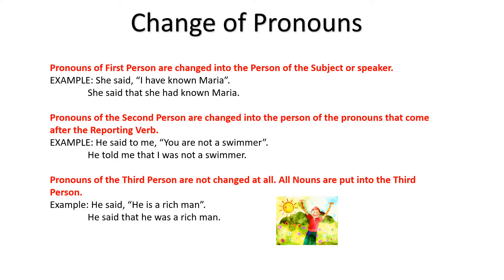There is also a change of pronouns. Pronouns of the first person are changed into the person of the subject or speaker. For instance, if she says 'I have known Maria,' it changes to 'She said that she had known Maria.' Pronouns of the second person are changed into the person of the pronoun that comes after the reporting word. For example, 'He said to me, you are not a swimmer' becomes 'He told me that I was not a swimmer.' Pronouns of the third person are not changed at all — all nouns are put into the third person only. So 'he said he is a rich man' becomes 'he said that he was a rich man.'